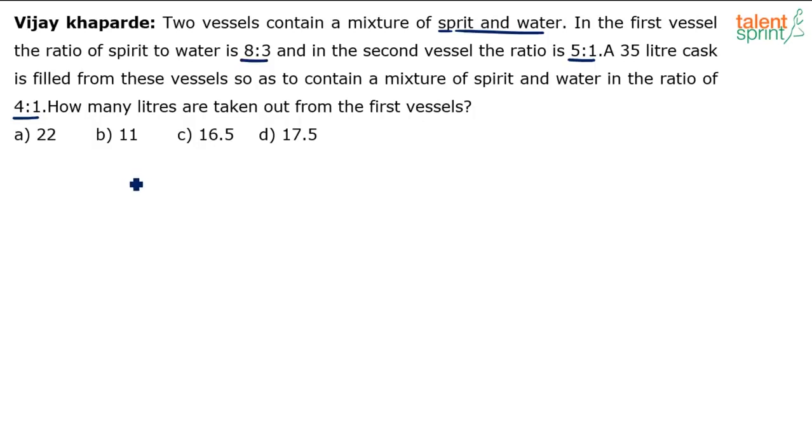Now, very simple. You know, first ratio is 8:3, second ratio is 5:1. The mixture of these two ratios will give you a ratio of 4:1. All these ratios are spirit to water. The final mixture is also spirit to water. Now, you either take the concentrations of spirit in all three cases or the concentration of water in all three cases and try to apply the allegation rule. Let's go by the concentration of spirit.